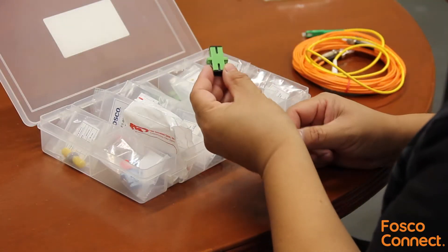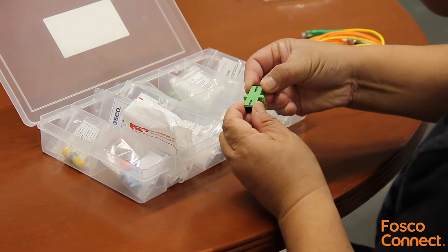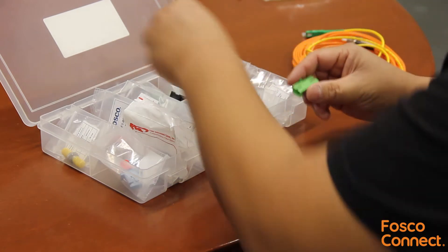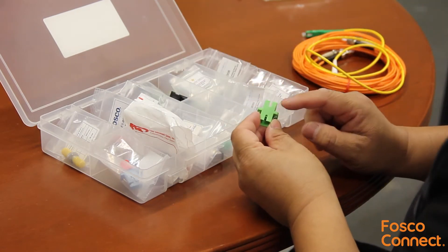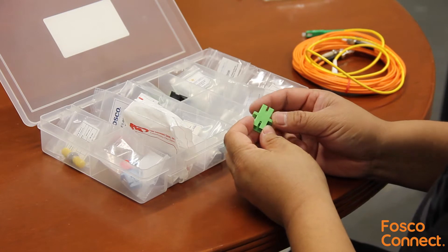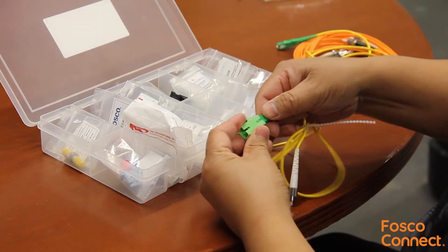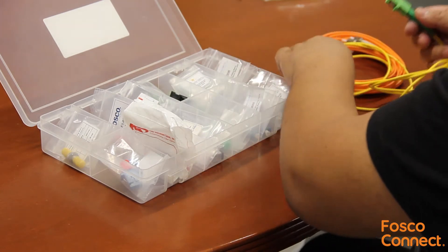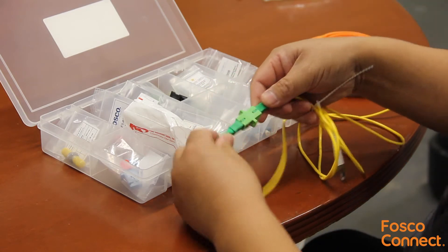The next one is a SC-APC to SC-APC adapter. The green color means that it is an APC angle polished connector. Here is how it's used, SC-APC to SC-APC connector.